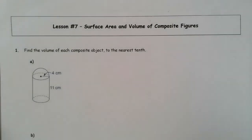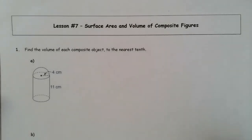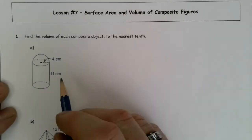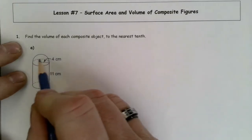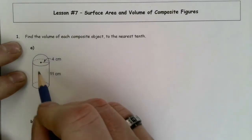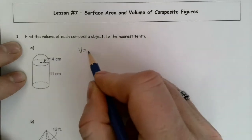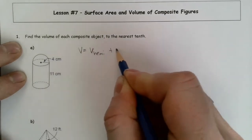Volume is actually a little bit easier to work with. Conceptually it's a little bit more complicated than surface area, but practically speaking, when you're evaluating it, it's a bit easier. For this one shape right here, what we've got is a hemisphere over top of a cylinder. So the total volume is going to be the volume of the hemisphere plus the volume of a cylinder.